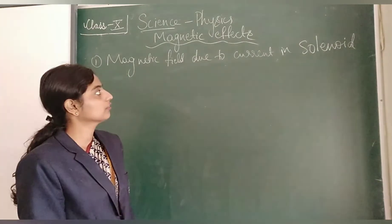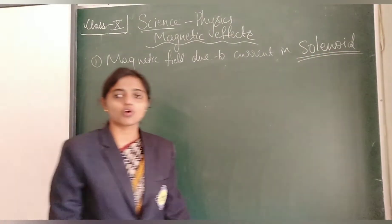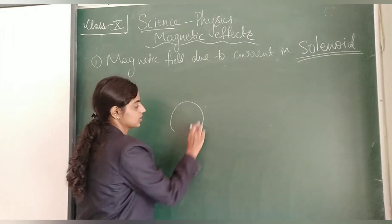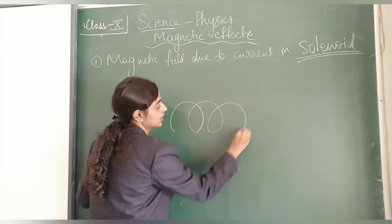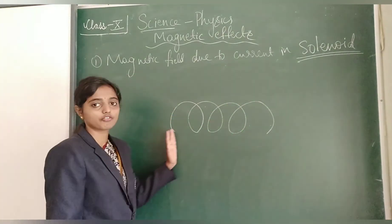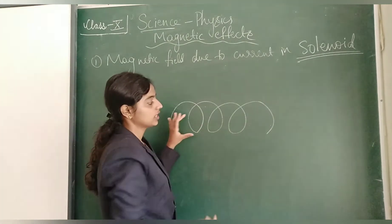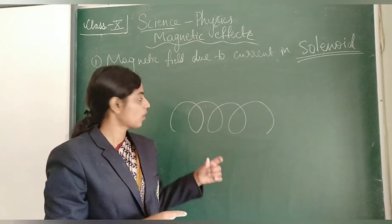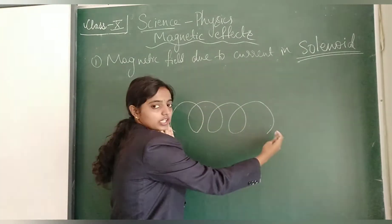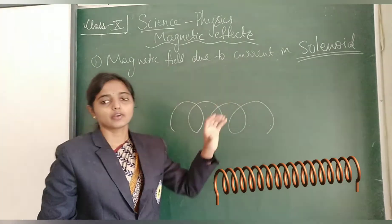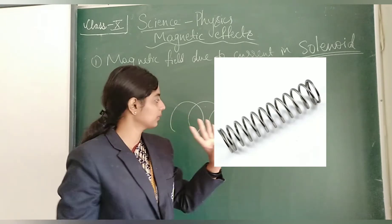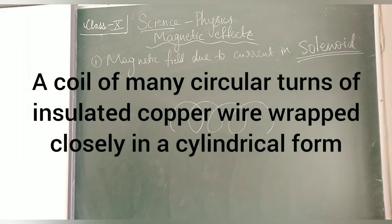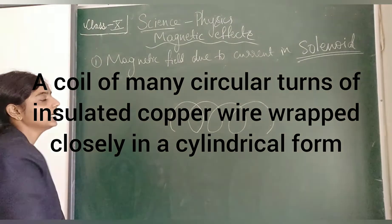Now let us see magnetic field due to current in a solenoid. A solenoid is a coil of many circular turns of insulated copper wire closely wrapped in a cylindrical shape. If you take a straight wire and keep making circular loops closely wrapped, you get a solenoid which looks like a spring.